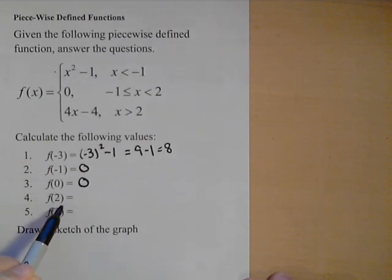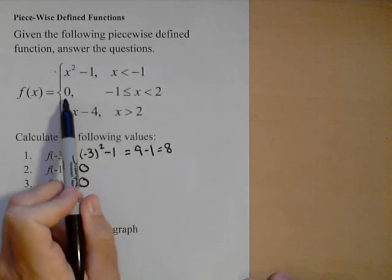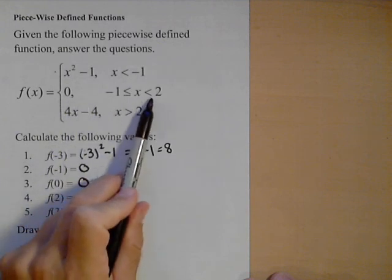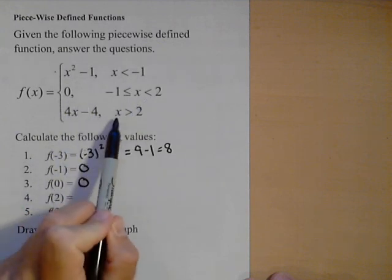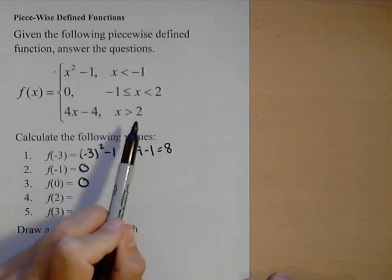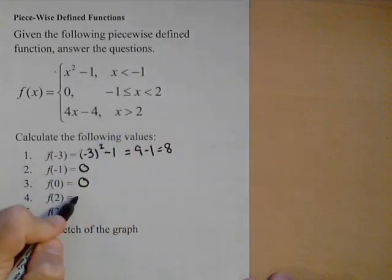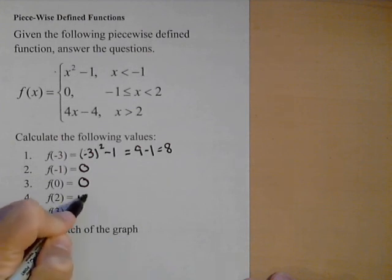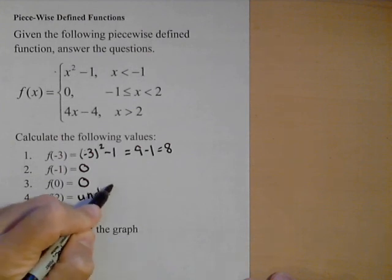f of two, notice it's zero when x is less than two. It's four x minus four when x is greater than two. This function is not defined for x equal to two. So we would say undefined.